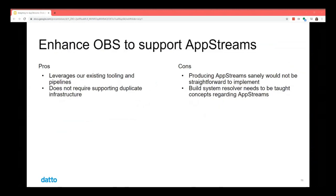The third option — enhancing OBS to support application streams — leverages our existing tooling and pipelines and doesn't require duplicate infrastructure. However, producing app streams would not be straightforward to implement. The build system resolver needs to be taught concepts regarding application streams, since OBS has a built-in dependency resolver that processes build chains and cycles. This is a non-trivial amount of effort.